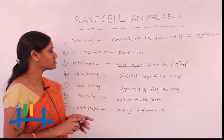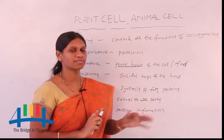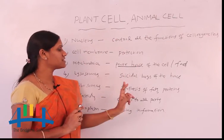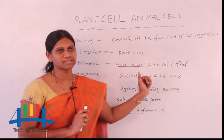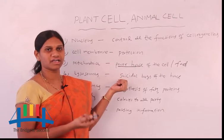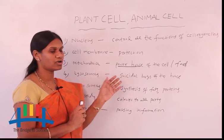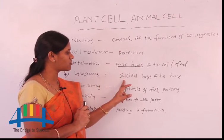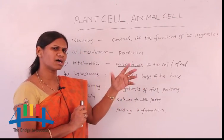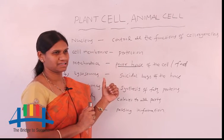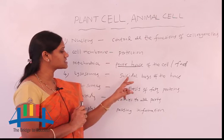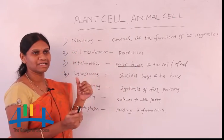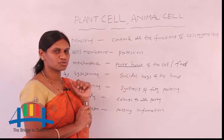The next cell organelle is lysosomes. Lysosomes are also known as the suicidal bags of the cell. These are present only in animal cells. The function of lysosomes is to release enzymes, which help in the digestion of food substances. After releasing the enzymes, the lysosomes die — that is why they are called suicidal bags. Lysosomes help digest food substances like carbohydrates, fats, and proteins.